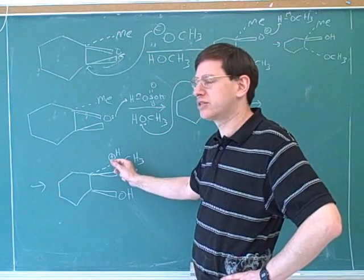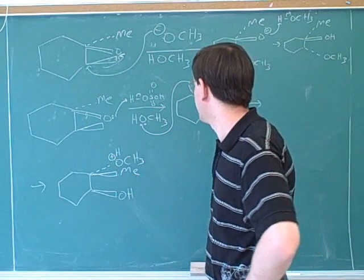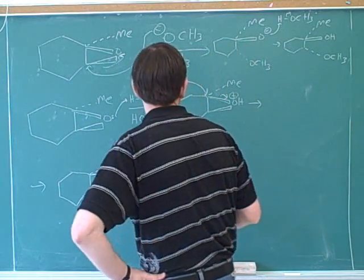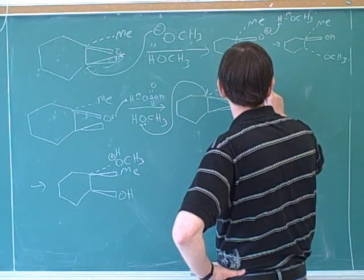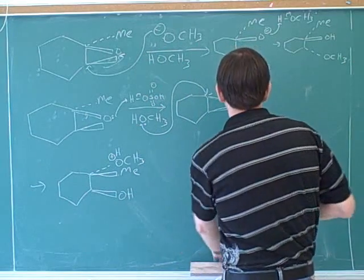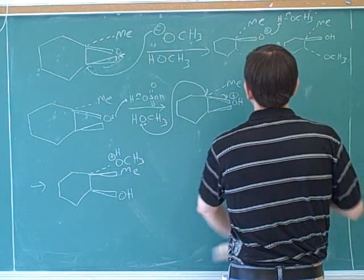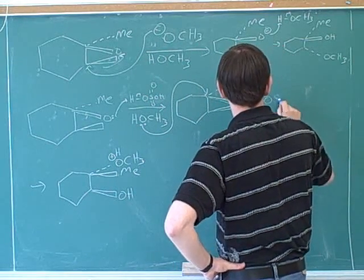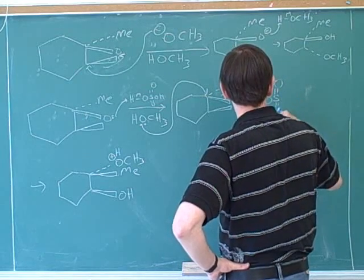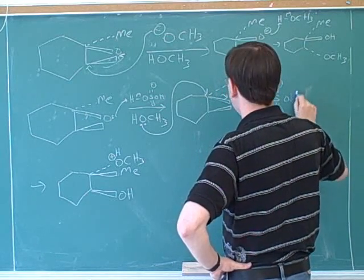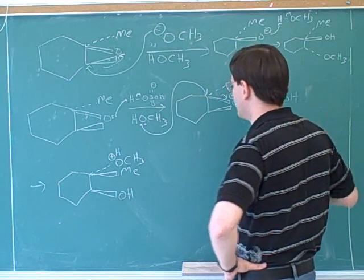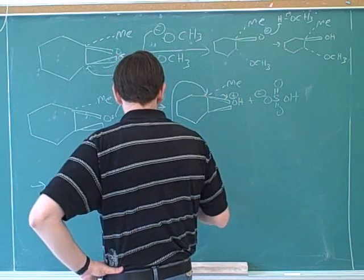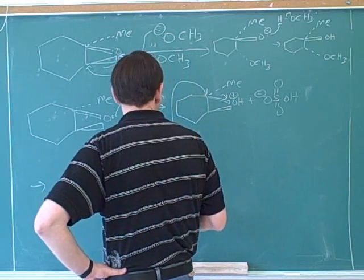That leaves us with a positive charge, which we can get rid of with a deprotonation. We can use the sulfate that we produced in a previous step for that deprotonation.